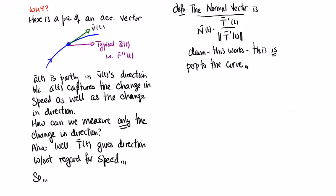What we're claiming is that given T pointing along the curve, N is perpendicular to it — a 90-degree angle between them. That's the claim. How do we show that two things are perpendicular? Easiest way: take the dot product. If the dot product is zero, we've done the job. So we'll show that N dotted with T equals zero.